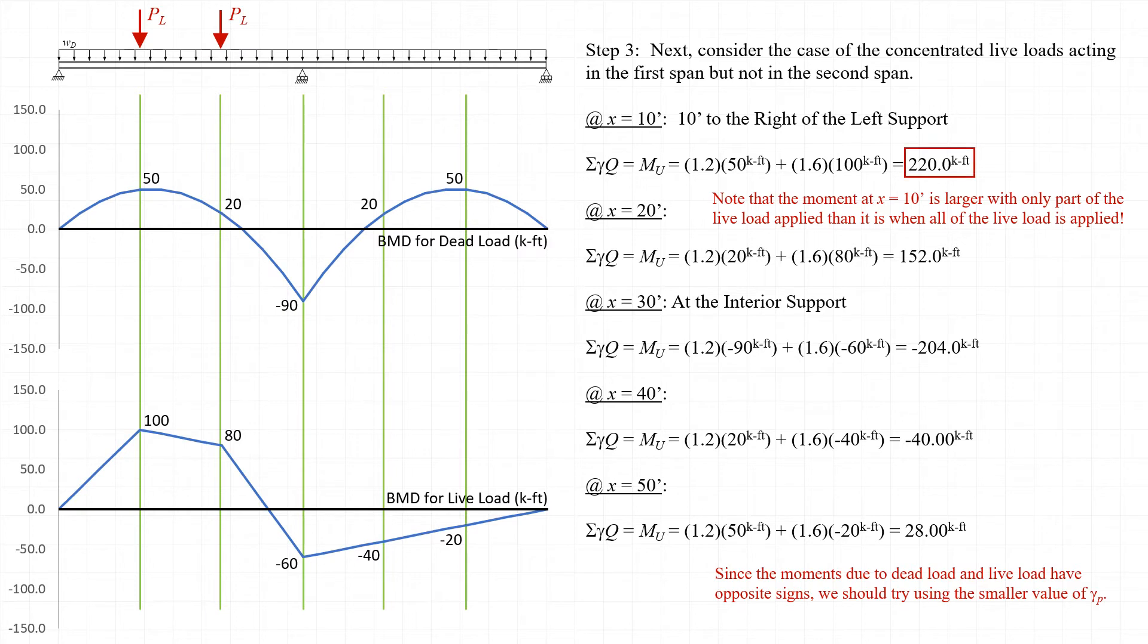Applying the load combination to this case, we actually end up with a larger factored moment Mu than we did when the live load was applied to both spans concurrently. Additionally, since the dead load moment and the live load moment have opposite signs at the same locations in the second span, it may be prudent to consider using the smaller value of the dead load factor in that case.